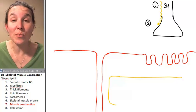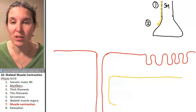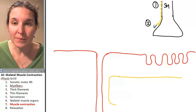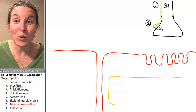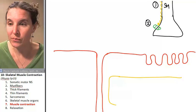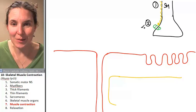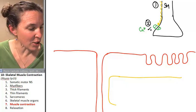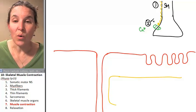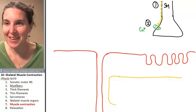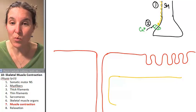When the action potential hits the axon terminal, who's going to open? Voltage-gated calcium channels. And who's going to roll in? Calcium. I've got to try to make sure that my numbers match. So voltage-gated calcium channels open and then calcium rushes in. That's my number three.